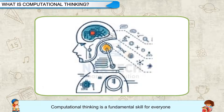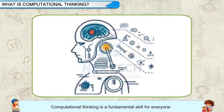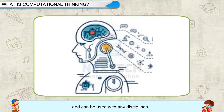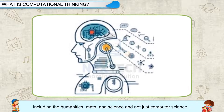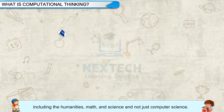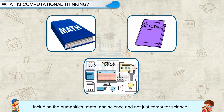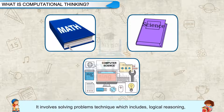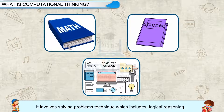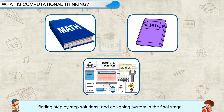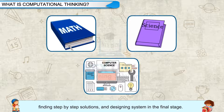Computational Thinking is a fundamental skill for everyone and can be used with any discipline, including the humanities, math, and science — not just computer science. It involves a problem-solving technique which includes logical reasoning, finding step-by-step solutions, and designing systems in the final stage.